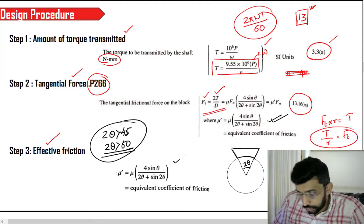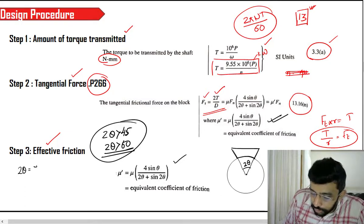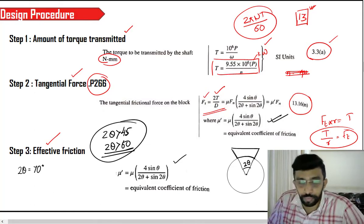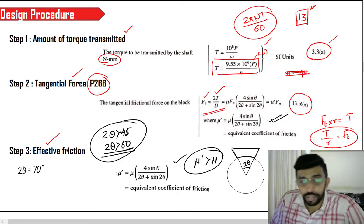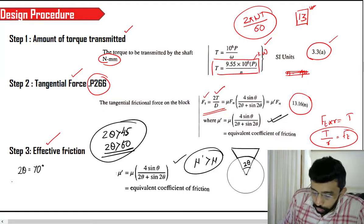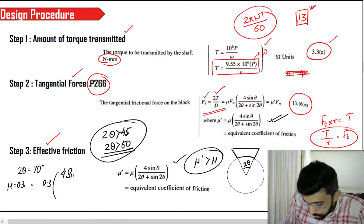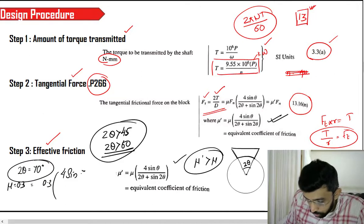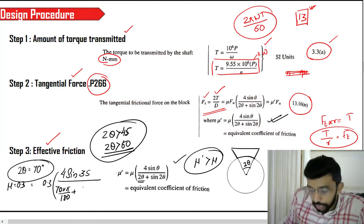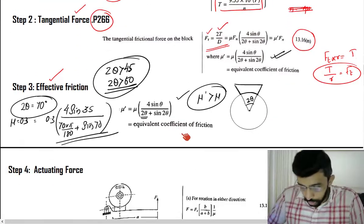Most students commit a mistake while substituting in this equation. For example, if 2θ = 70 degrees, after calculation you should get μ' greater than μ — if not, you've made a mistake. The substitution looks like: 0.3 × 4sin(35) divided by (70 × π/180 + sin70). Note that 2θ must be in radians in the denominator. Make sure you are doing the proper substitution.